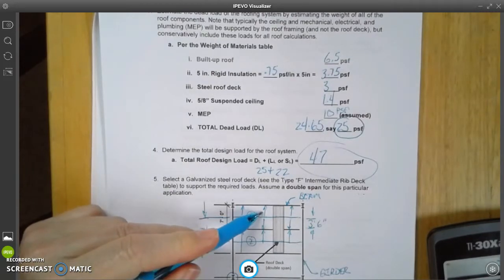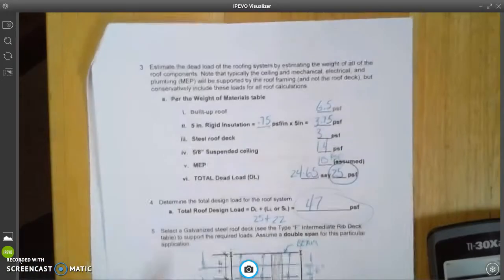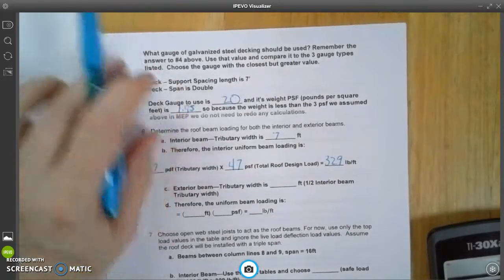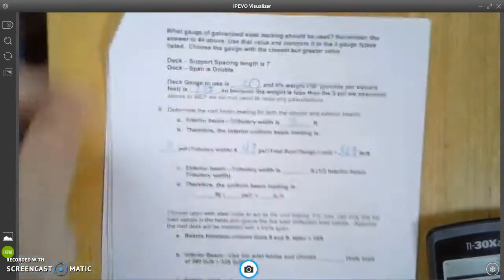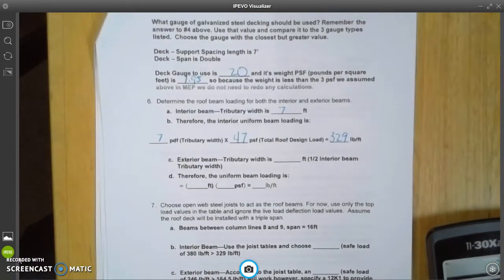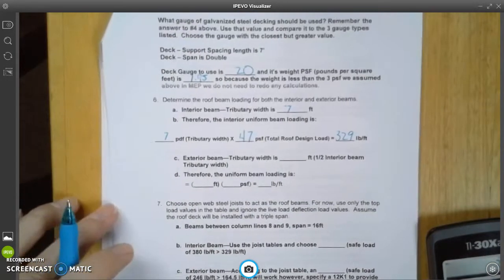So this is going to be 3.5, or 3 feet 6 inches. You have to convert the inches to feet, so you're going to take 6 and divide that by 12, you'll get 0.5.